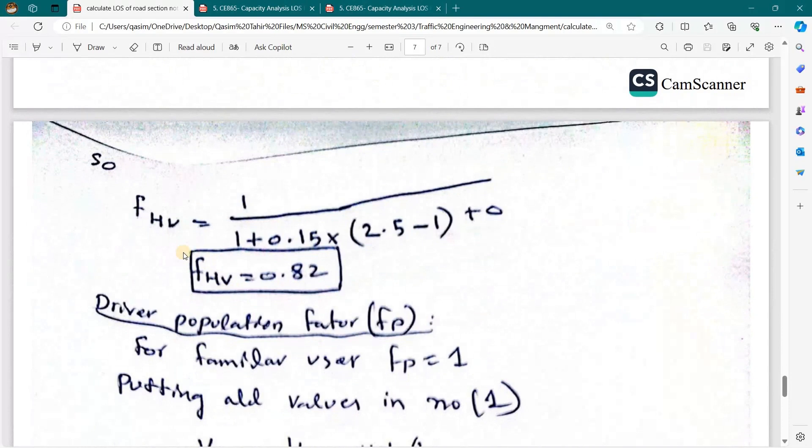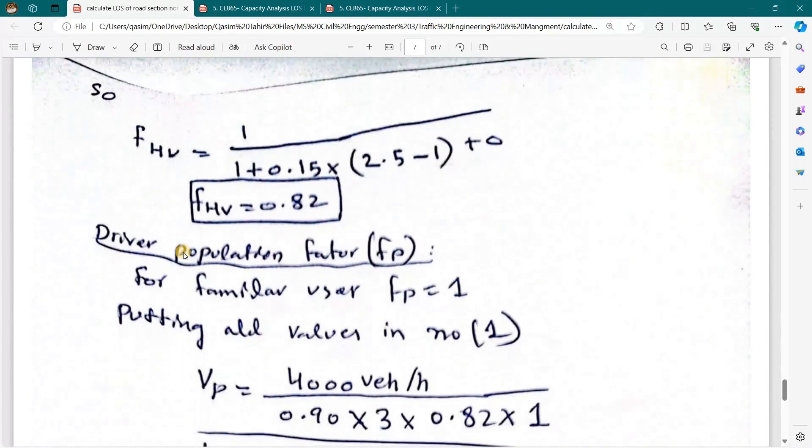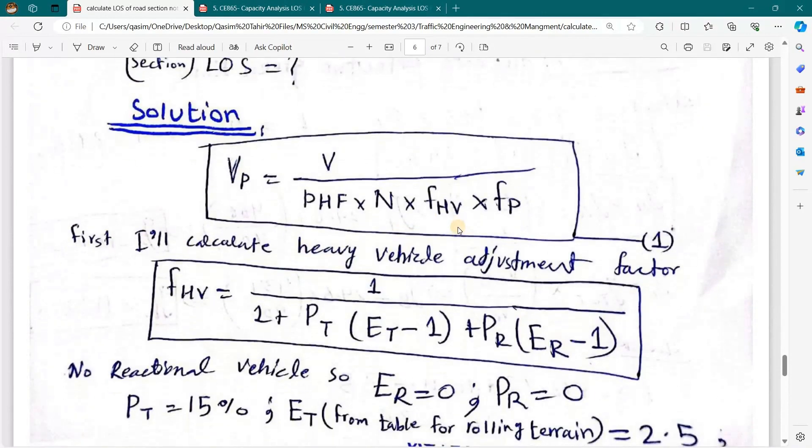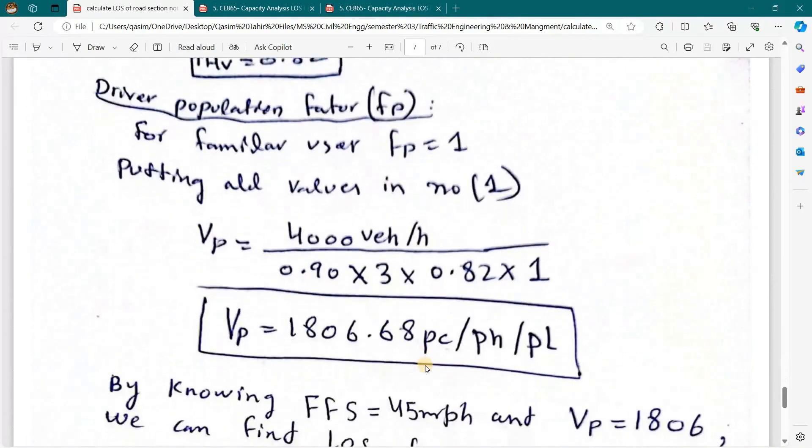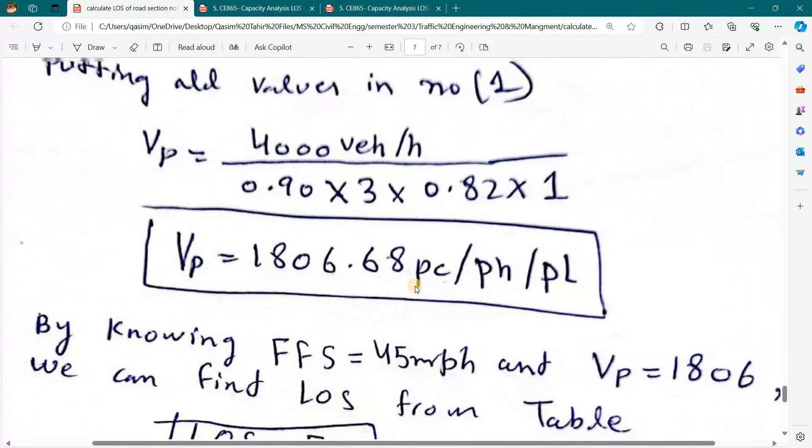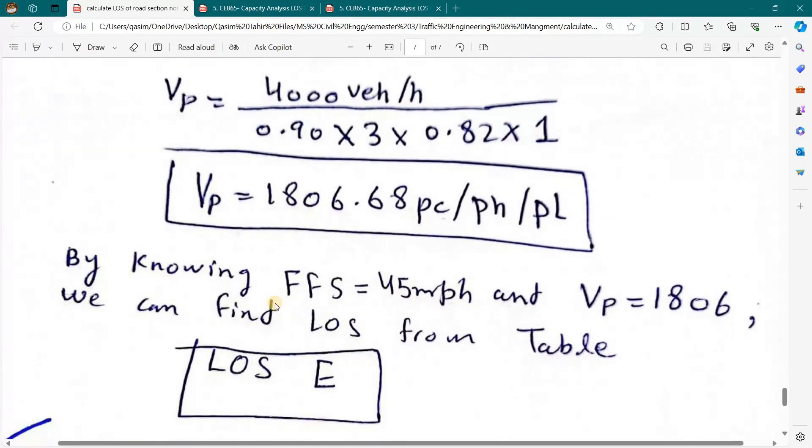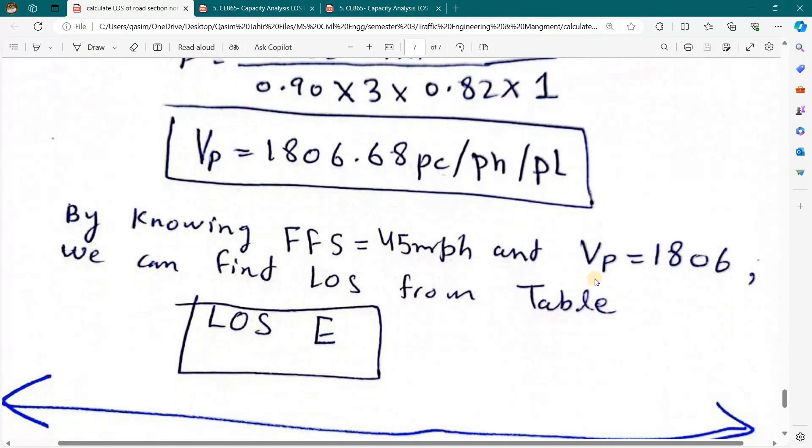Here we have heavy vehicle adjustment factor. Now we will put all values in formula number one and we will get volume in passenger car equivalent per hour per lane.